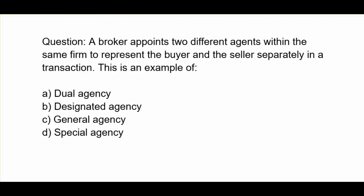A broker appoints two different agents within the same firm to represent the buyer and the seller separately in a transaction. This is an example of: A. Dual agency. B. Designated agency. C. General agency. D. Special agency.